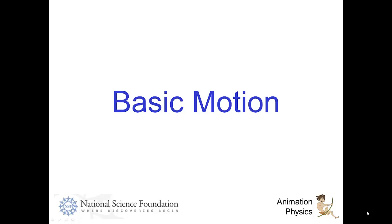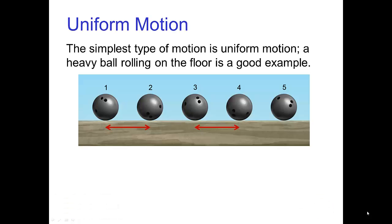Basic motion. The simplest type of motion is uniform motion. A heavy ball rolling on the floor is a good example. An object in uniform motion goes in a straight line.